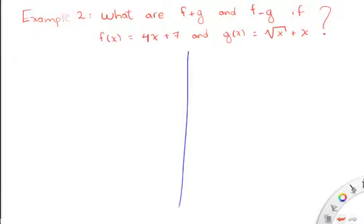The first one is asking us to find f plus g. We know that because it's given that f of x, let me use different colors here, f of x is going to be 4x plus 7, and g of x is going to be the square root of x plus x.